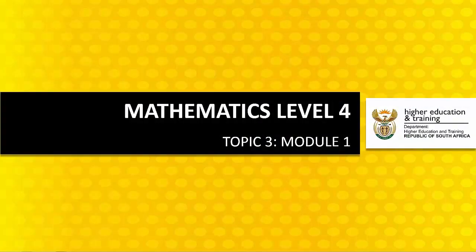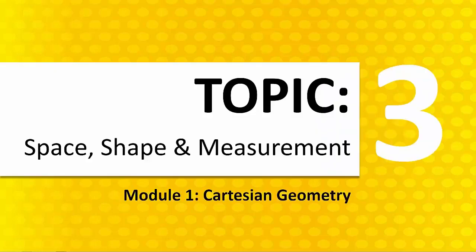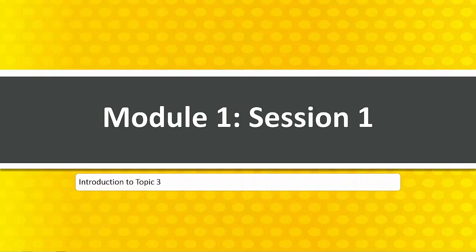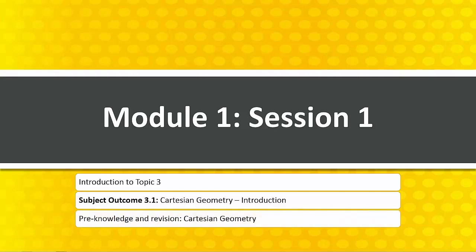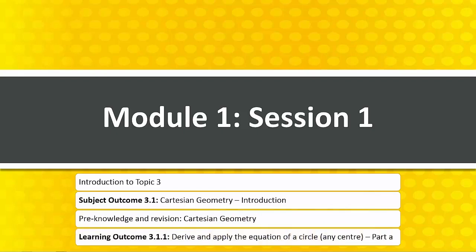Mathematics Level 4, Topic 3, Module 1. Welcome to Topic 3 of the Mathematics Level 4 Support Package: Space, Shape and Measurement. Topic 3, Space, Shape and Measurement, Module 1: Cartesian Geometry. Module 1, Session 1. Session 1 will cover Introduction to Topic 3, Subject Outcome 3.1, Cartesian Geometry Introduction. Pre-Knowledge and Revision: Cartesian Geometry. Learning Outcome 3.1.1: Derive and Apply the Equation of a Circle, Any Centre, Part A.